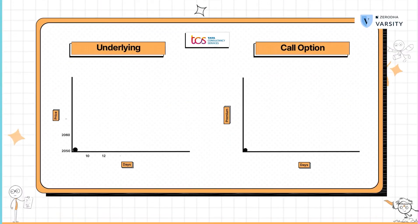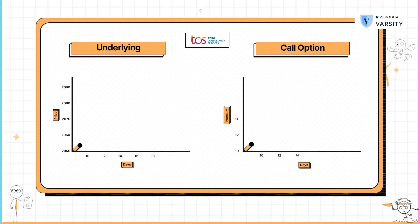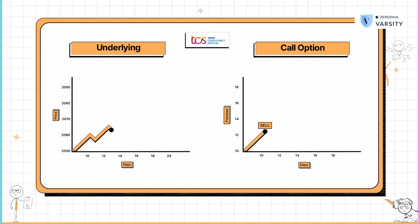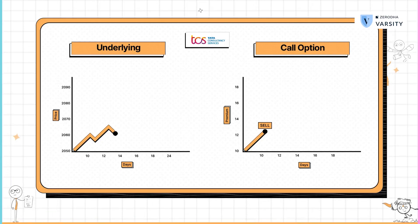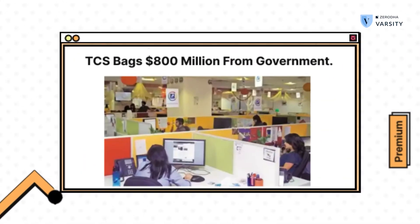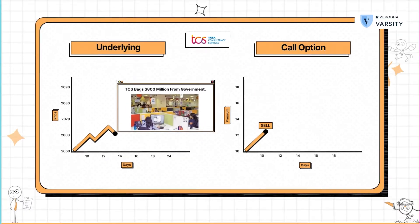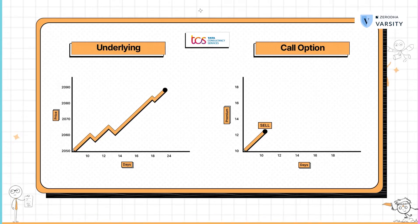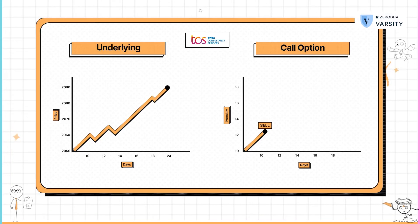Assume that you've sold a call option on TCS. What do you expect as a call option seller? You obviously expect the price to drop. But imagine the next day there is an announcement on the stock where the government declares that they've awarded an 800 million outsourcing project to TCS. What do you think will happen to the stock price? Obviously, the stock price will increase and your naked call option position will start to bleed.